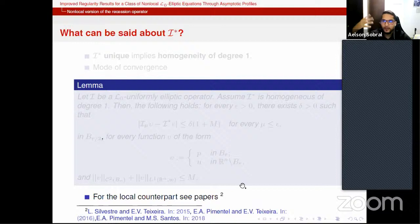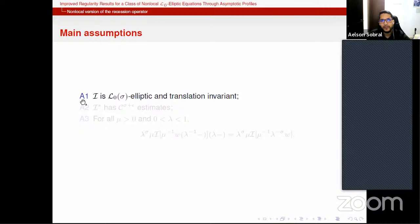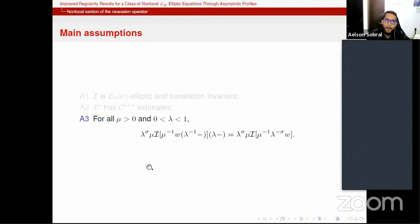So along this talk in our paper, what are our main assumptions? The main assumptions are the L0 ellipticity of the main operator and translation invariant, that is, we are not considering the case with coefficients, just for simplicity. Any recession has sigma plus epsilon estimates, and we have this scaling condition here that I'm going to discuss a little bit later. But before, let me give some examples where our assumption apply.